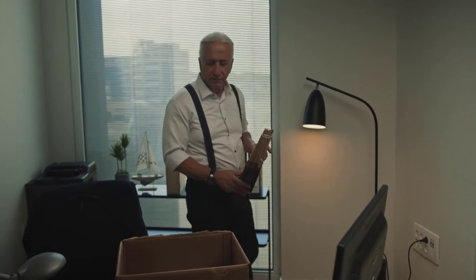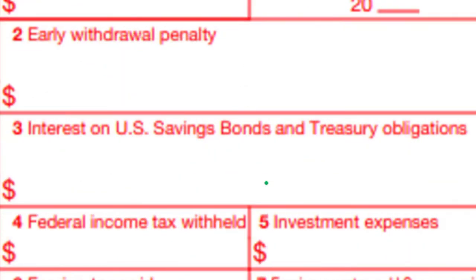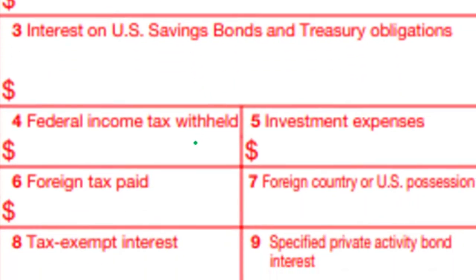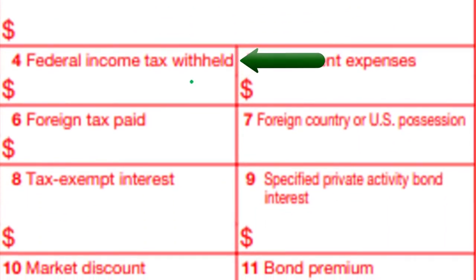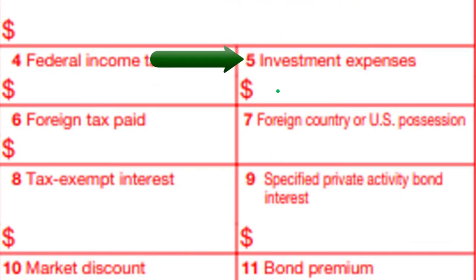Box 3 is interest on U.S. savings bonds and treasury obligations. Box 4 is federal income tax withheld. Oftentimes with interest you won't have any withholdings because the interest amount is usually not the largest. If you do have a lot of interest, you might have some withholdings. Box 5 covers investment expenses, if applicable.